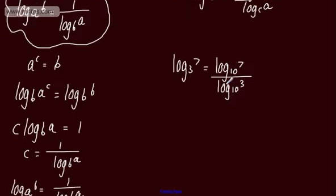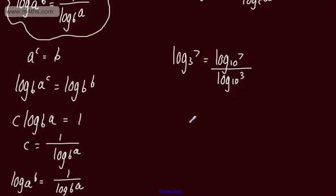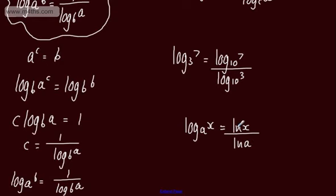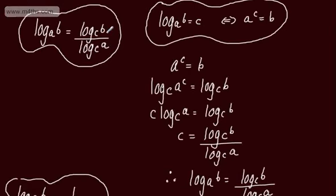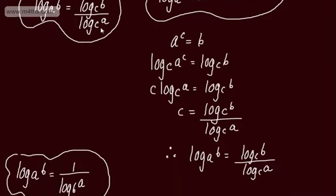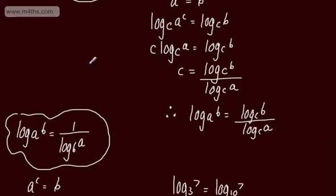One important application of the change of base formula you'll see later is that log to the base A of X is equal to the natural log of X over the natural log of A. The natural log is base E, which we study in a later unit. For now, these are two results we need to be able to quote and use: log to the base A of B equals log to the base C of B divided by log to the base C of A, and log to the base A of B equals 1 over log to the base B of A.